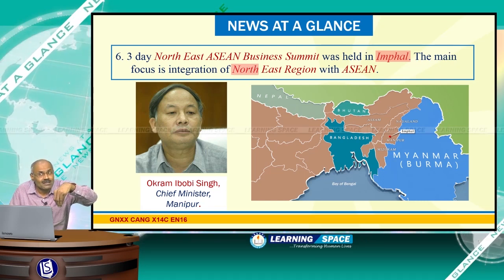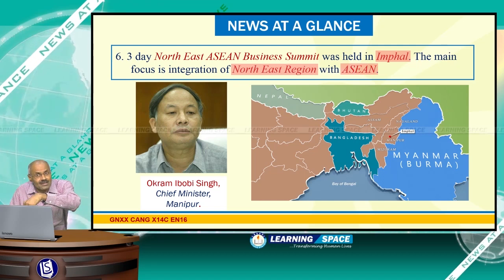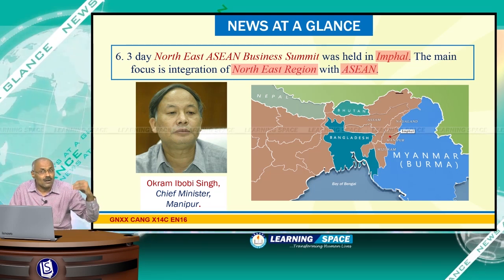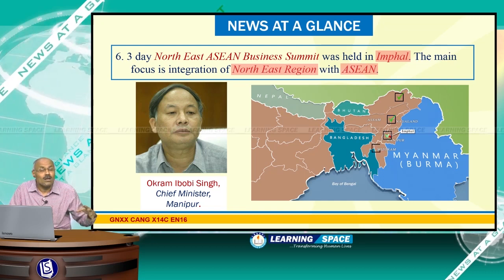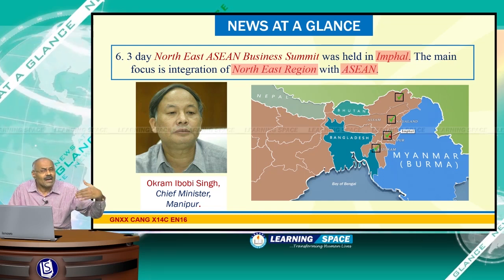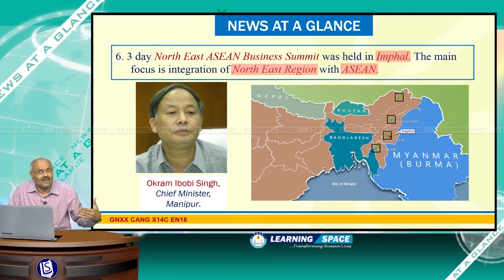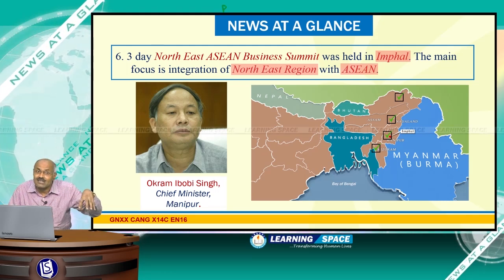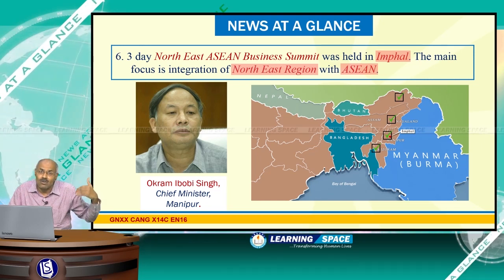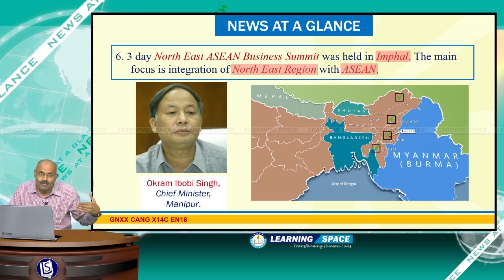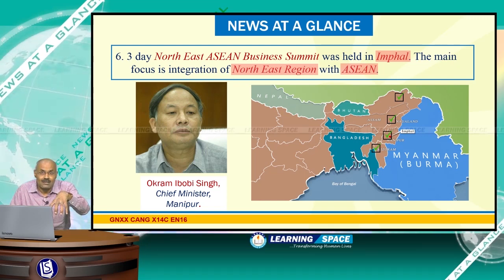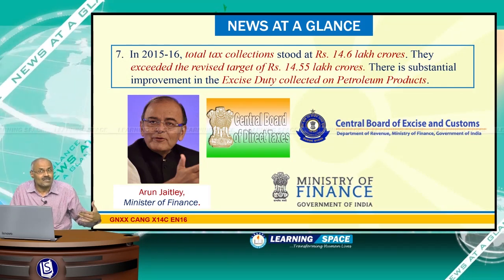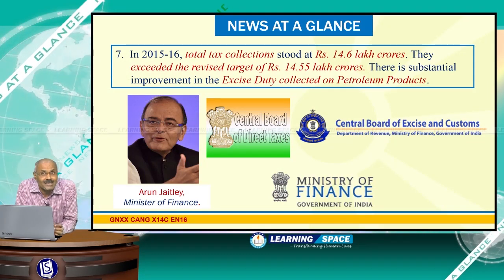A three-day Northeast ASEAN Business Summit was held in Imphal. The focus of the summit is the integration of the Northeast region with ASEAN countries. India has a long border with Myanmar; four states — Arunachal Pradesh, Nagaland, Manipur, and Mizoram — share a border with Myanmar, which is part of ASEAN. The IMT corridor is an international highway connecting India with Thailand through Myanmar, and the construction of the IMT Trilateral Highway is ongoing.